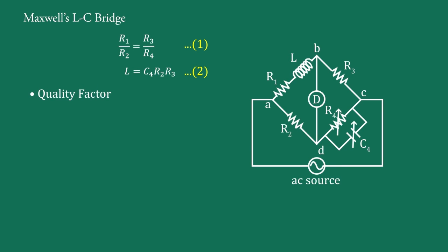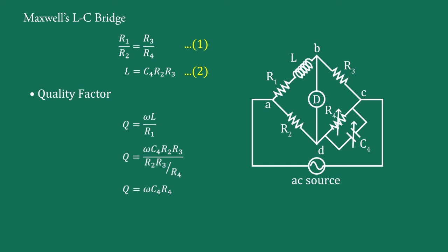Now, quality factor Q: for an R1-L series connection, Q equals ωL upon R1. Substituting the values of L and R1 from the balance equations, we get Q equals ω·C4·R2·R3 upon (R2·R3/R4), which simplifies to Q equals ω·C4·R4. From this formula, Q factor is directly proportional to capacitance. For high Q we need a large capacitor, but it is bulky and costly. So this bridge is used for the medium range of quality factor, that is between 1 to 10.